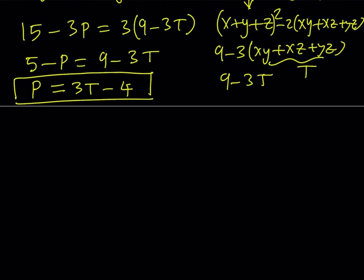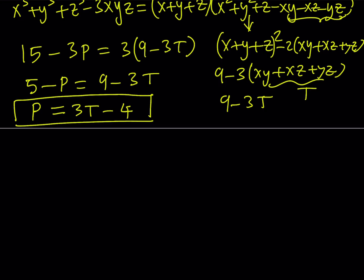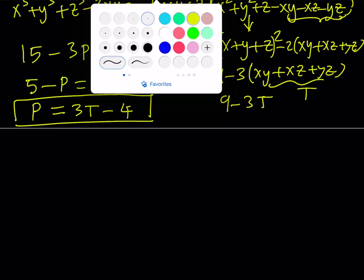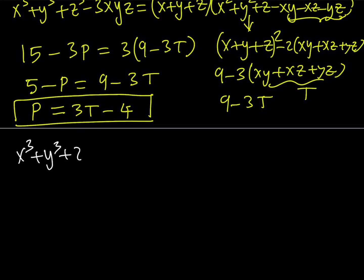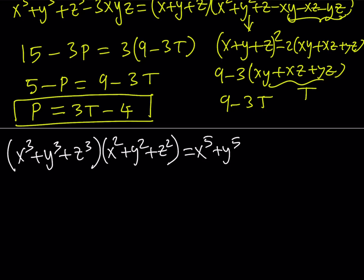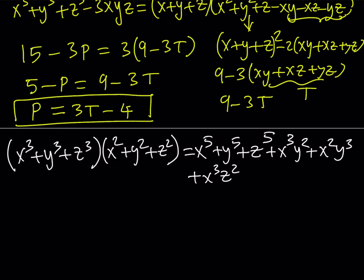Now let's go ahead and do something else. I would like to get the sum of fifth powers. So I would like to use x cubed plus y cubed plus z cubed and multiply it by the sum of the squares. When I do this, I'm going to be getting the fifth power, but also extra terms. This should give me x to the fifth plus y to the fifth plus z to the fifth, plus terms like x³y², x²y³, x³z², x²z³, y³z², and y²z³.